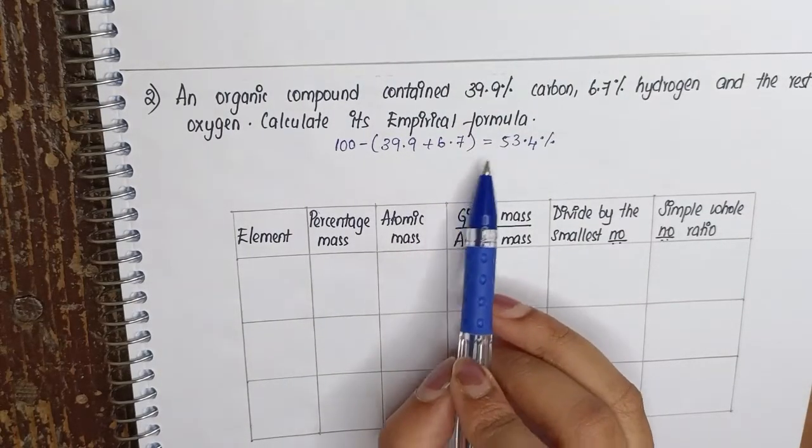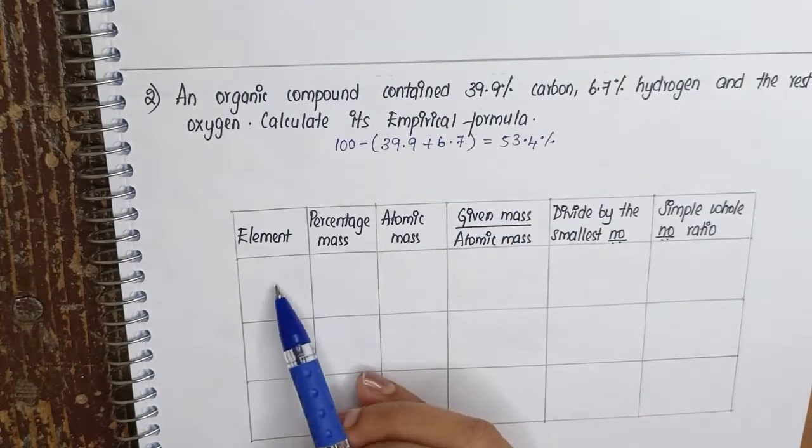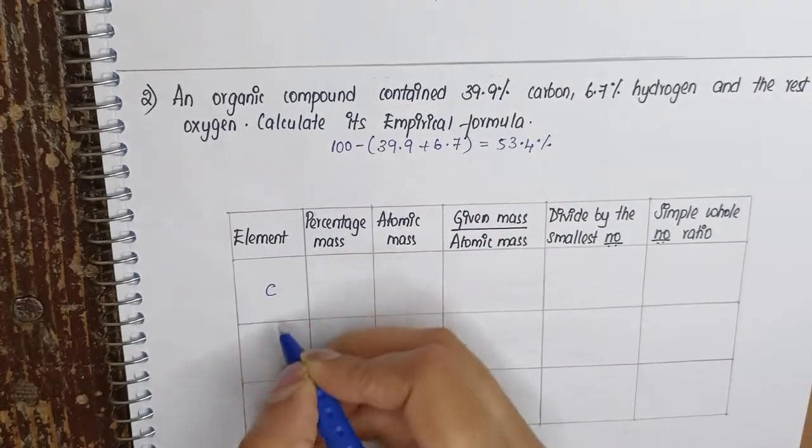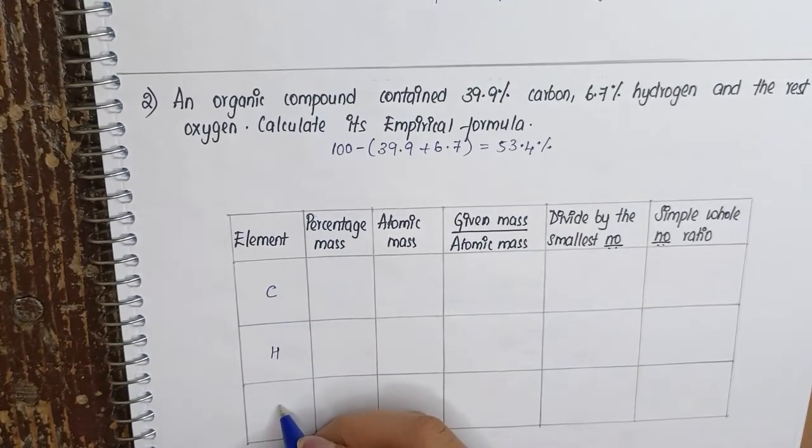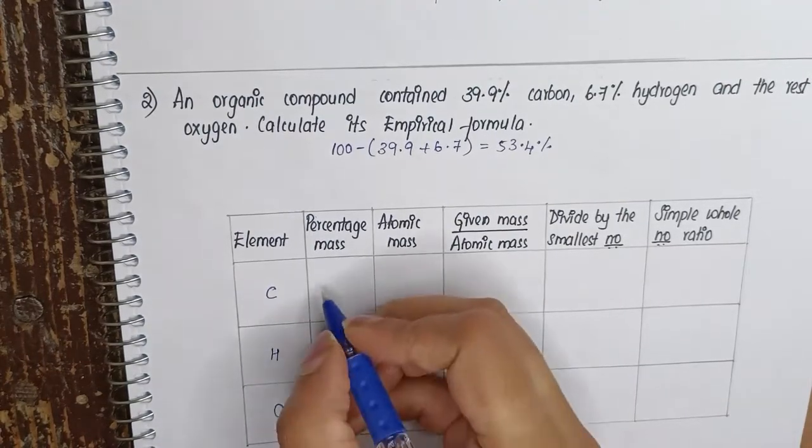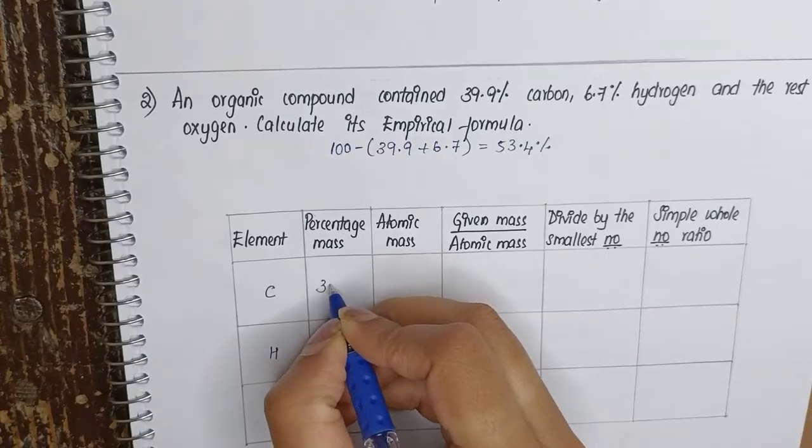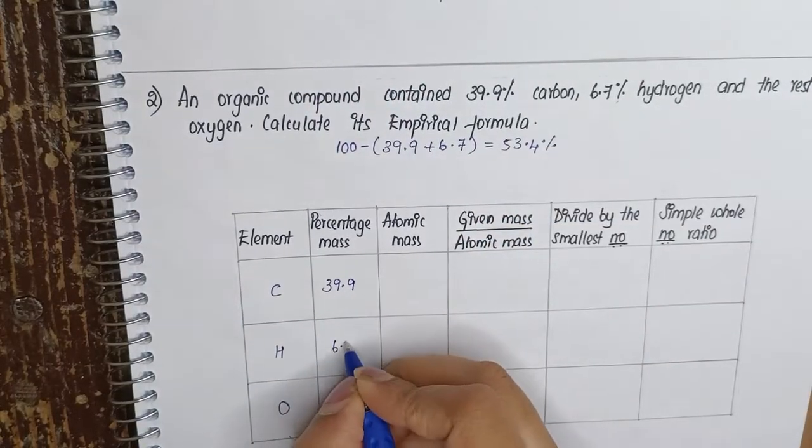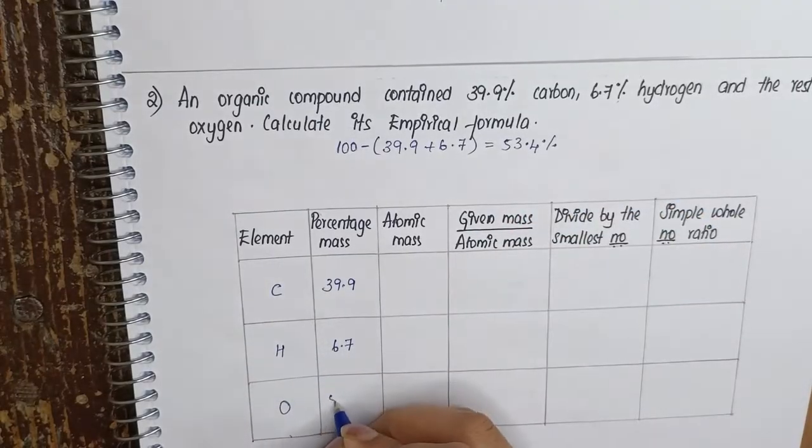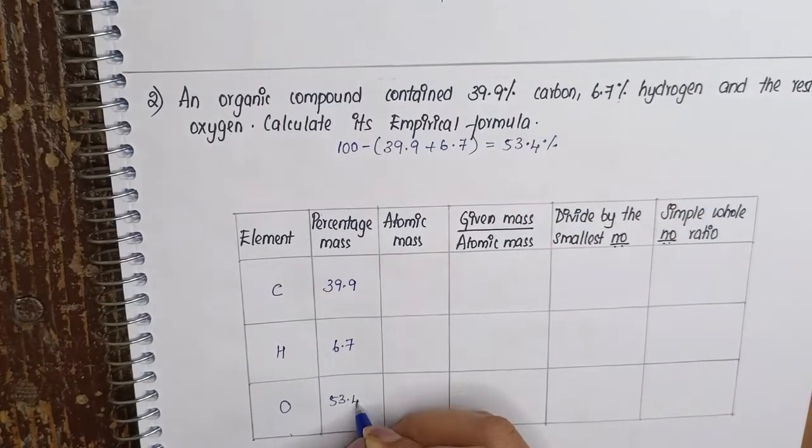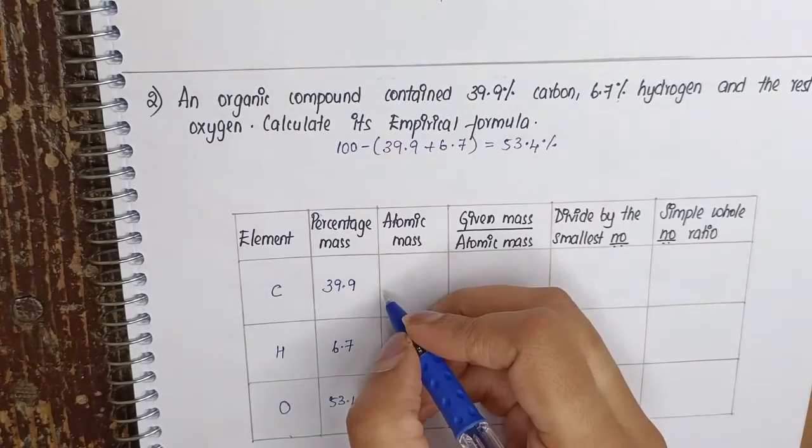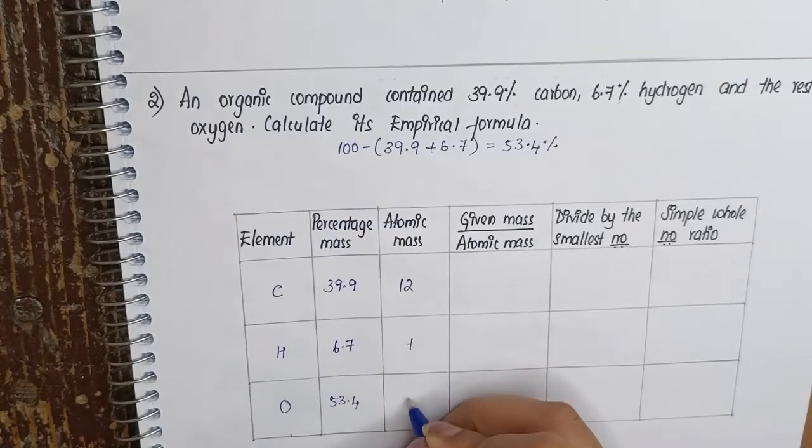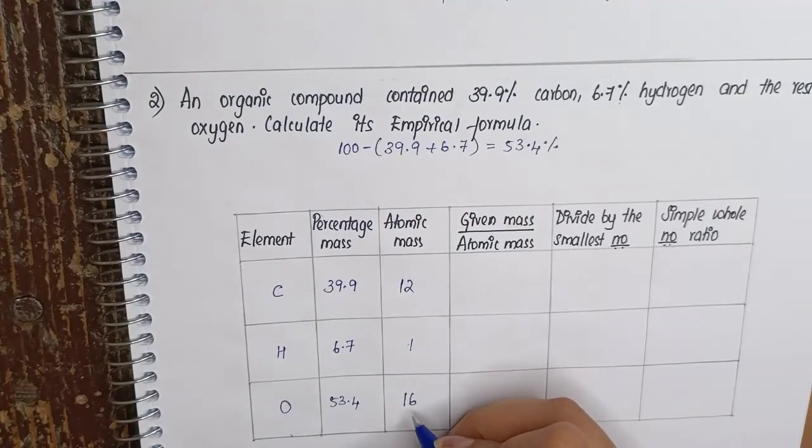Now we know the percentage of oxygen, let's fill up the table. The elements are carbon, hydrogen, and oxygen. Carbon percentage is 39.9, hydrogen is 6.7, and oxygen is 53.4 percent. Atomic mass of carbon is 12, hydrogen 1, oxygen 16.